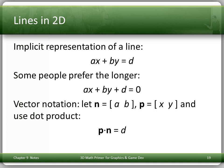Lines in 2D. The implicit representation of a line is, of course, by the equation. In two dimensions with x and y, if we pick three constants a, b, and d, then the equation ax + by = d is the equation of a line — you remember that from high school. Some people prefer ax + by + d = 0; that's simply taking d over to the other side (the d in that form is the negative of the d in the first). In vector notation, let n be the vector (a, b) and p be a point (x, y); the same equation can be rewritten as p·n = d, where p·n equals ax + by.